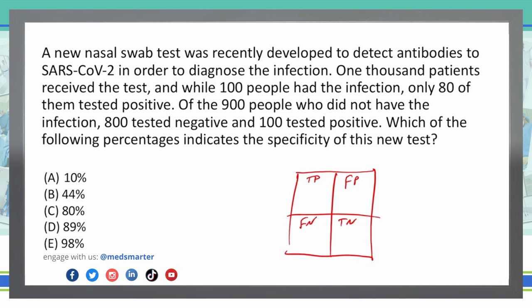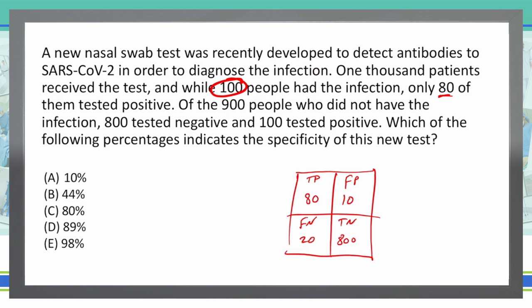True positive means the patients that tested positive and had the disease or infection — so 80 are true positives. There were 100 people who had the infection, so if 80 tested positive, that means 20 had a false negative. Then we had 900 people who did not have the infection: 800 tested negative, giving us 800 true negatives, and 100 tested positive incorrectly, making them false positives.